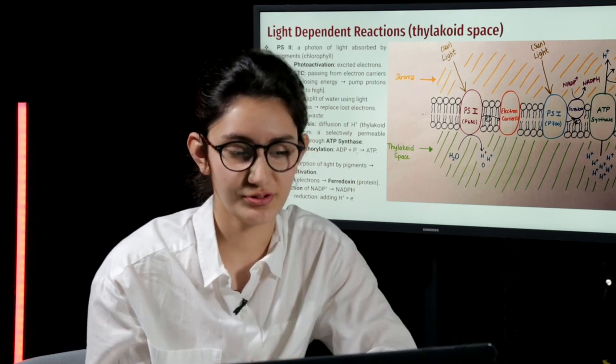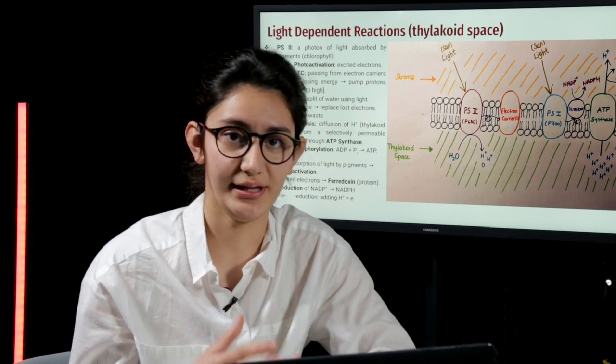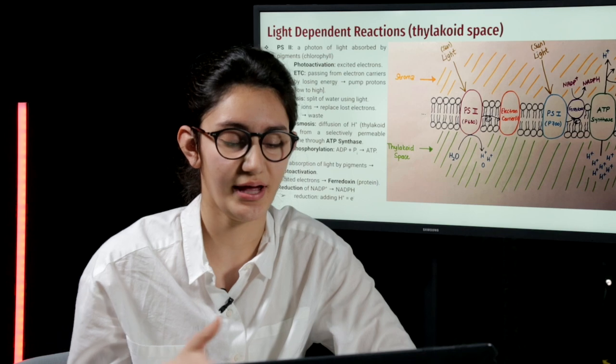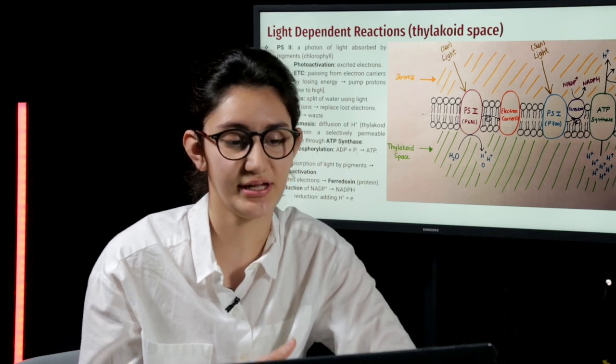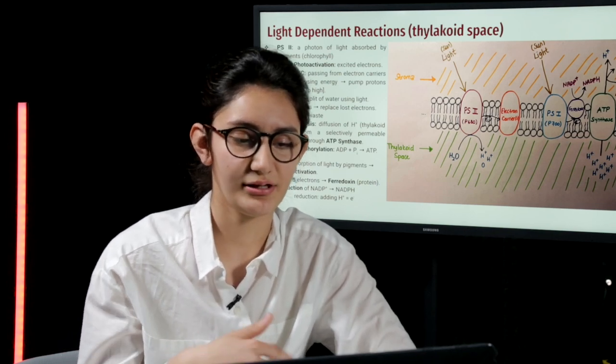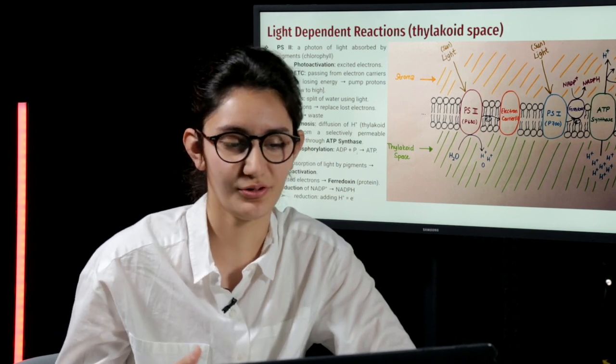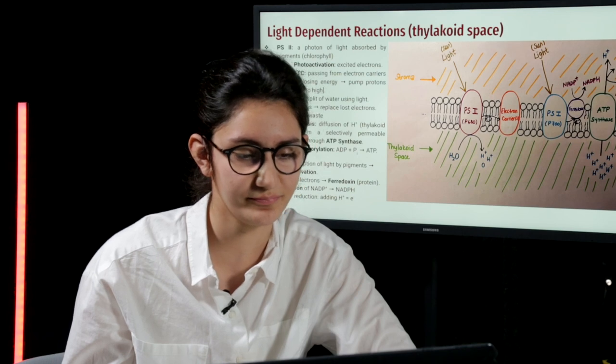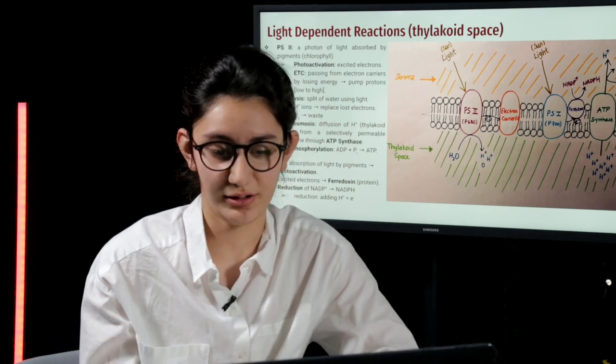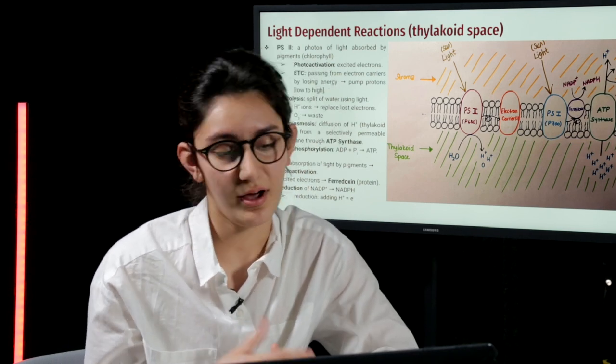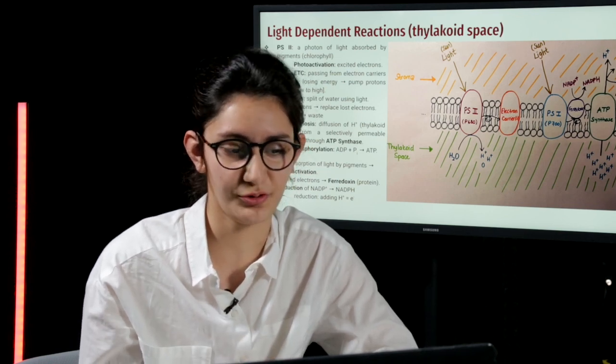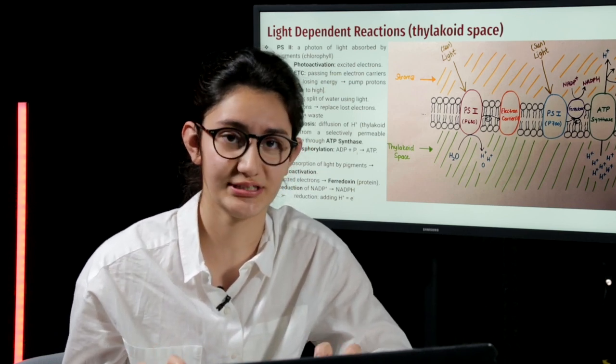Those excited electrons then pass through an electron transport chain. They pass from electron carriers and during this process, they lose energy. That lost energy is used to pump protons or hydrogens from low to high concentration. When these electrons are lost from photosystem II, other electrons should replace them. In order for this to occur, a process called photolysis occurs.